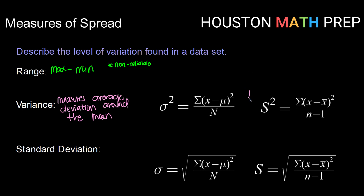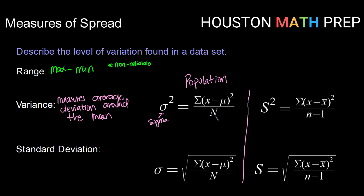Let's break these formulas down and see what all these pieces are. First of all, we have the lowercase Greek letter sigma squared — this is going to be for our population variance. We add up, using the capital Greek letter sigma, our deviations: each data value minus the mean, and then we square that value. So we add up the sum of the squared deviations and divide by the number in our population. That gives us variance for a population.